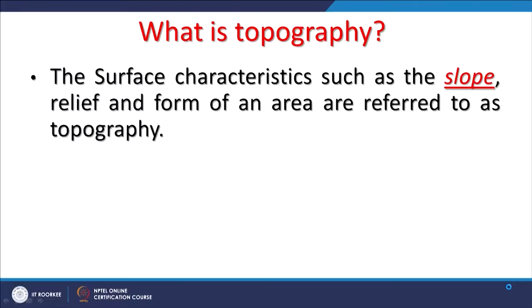Simply using a digital elevation model will not give you those characteristics or derivatives — we have to process that data. The purpose here is to understand the topography. Topography refers to surface characteristics such as slope, aspect, relief, and form of an area. The most common derivatives of a digital elevation model are slope and aspect.